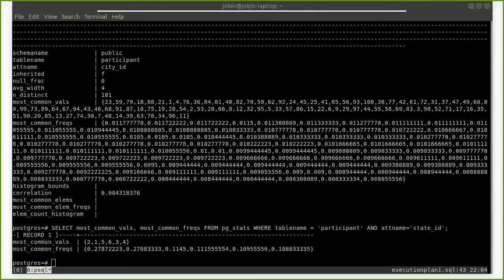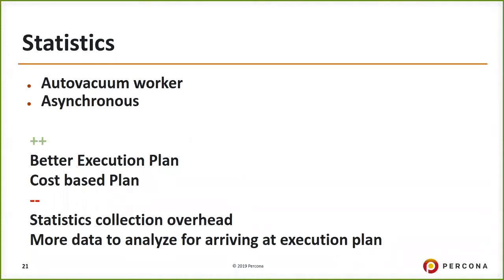The statistics tell us that state 2 has the maximum number of cities, so the chance of getting a record for state 2 is higher. The filtering and number of records returned from this table can be calculated based on these stats. Coming back to the presentation: most common values are recorded, and there are other things like histograms. Statistics are collected by the auto-vacuum worker and happen asynchronously in the background as a background worker, resulting in better execution plans. The downside is overhead in collecting and maintaining stats, and a bigger sampling size requires more space and may be complex to analyze.